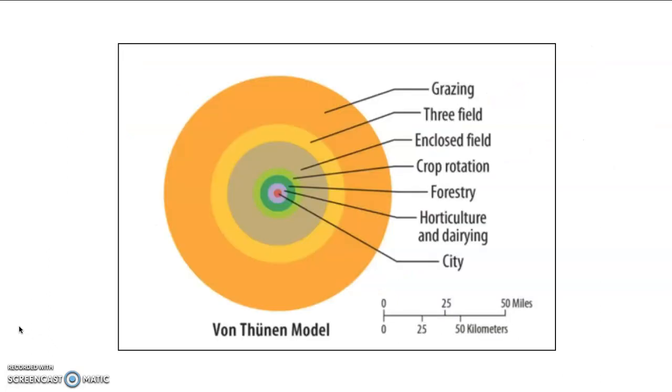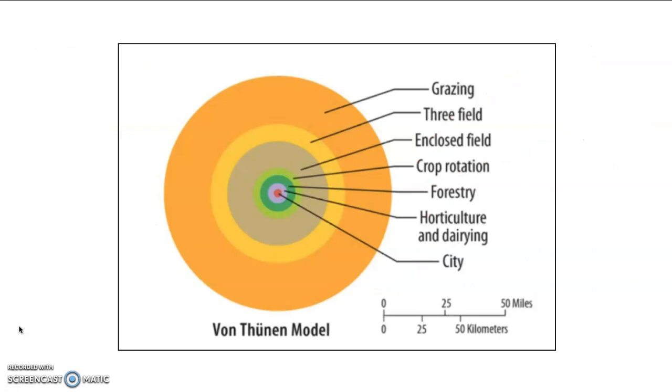So again, this is a more complicated model, but it does exactly the same thing. And now we have a modified model on the right hand side. So when a river runs through this, of course river allows for transportation. And so what happens is the model kind of stretches out and you can see that the city's in the middle, and you can see horticulture, which is intensive agriculture and dairy and then forestry and crop rotation and so on. And the way they kind of stretch out as a result of the river.